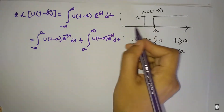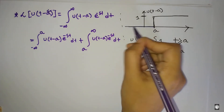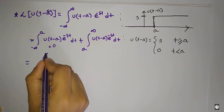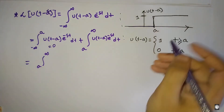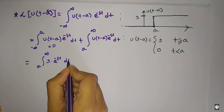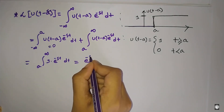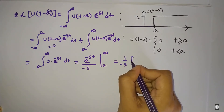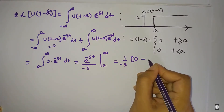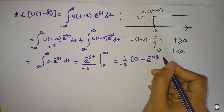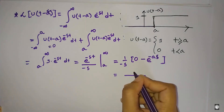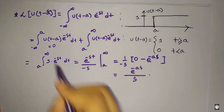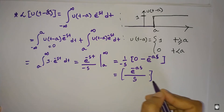Splitting the integral: from minus infinity to a the function value is 0, so that part vanishes. From a to infinity the function value is 1, so we integrate 1 times e to the power minus st dt from a to infinity. The integration gives e to the power minus st divided by minus s. Applying limits: e to the power minus infinity is 0, minus e to the power minus as remains. The result is e to the power minus as divided by s. So the Laplace transform of u of t minus a equals e to the power minus as by s.